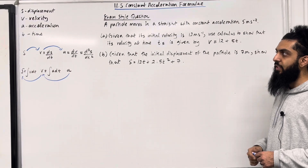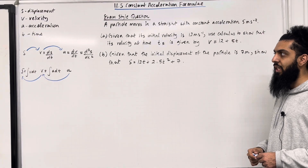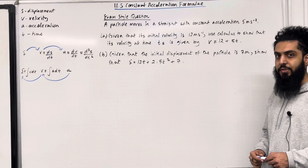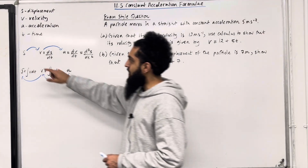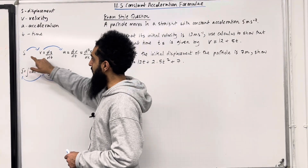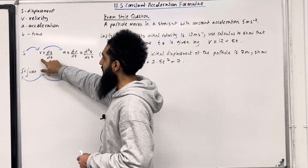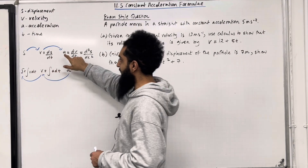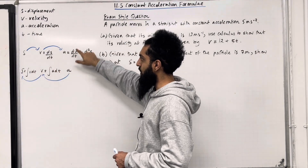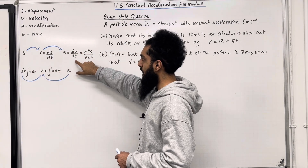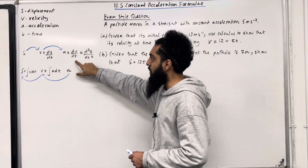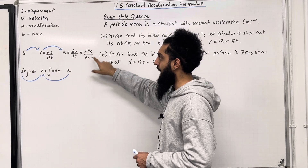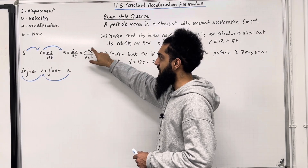S represents displacement, V represents velocity, A represents acceleration, and T represents time. S is your displacement. The velocity is given by differentiating the displacement with respect to time. The acceleration is given by differentiating the velocity with respect to time. Alternatively, we can differentiate the displacement twice — in other words, we can work out d²s over dt².